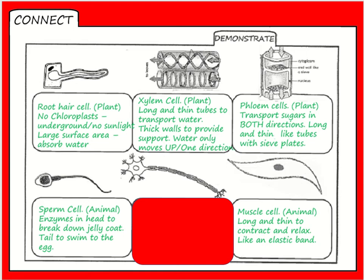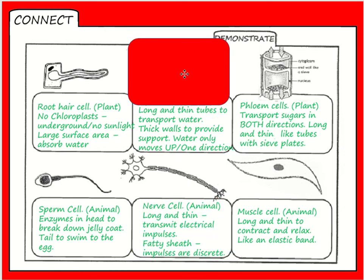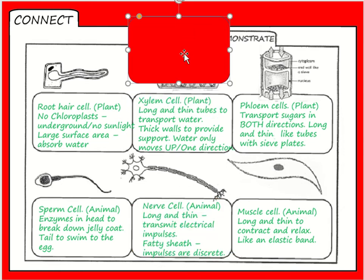Sperm cells - you should know by now they have got a tail to swim to the egg, and they have got enzymes in their head which is called an acrosome, which breaks down the jelly coat. Then there's a muscle cell which is long and thin to be able to contract and relax like an elastic band. And then a nerve cell - the nerve cell is long and thin to transmit electrical impulses and it has a fatty sheath around the axon part of it, which ensures impulses are discrete, meaning they don't move out to other impulses and the impulse continues to go in the direction it's meant to go.